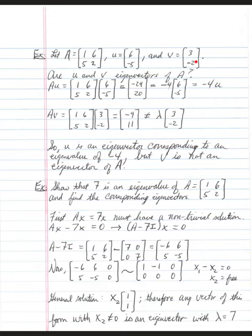Well, vector V is 3 and negative 2, but to get from negative 9 and 11 to 3 and negative 2, there is no scalar multiple that will do both. U is an eigenvector corresponding to an eigenvalue of negative 4, and that's because negative 4 times U gave us the same vector as A times U. But V is not an eigenvector of A. We could not find a scalar multiple.